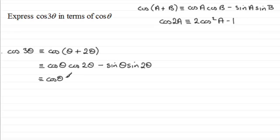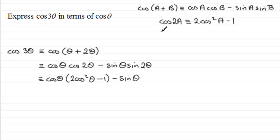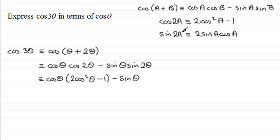So we can write cos(θ) multiplied by (2cos²θ − 1). For the next term, we have sin(θ) multiplied by sin(2θ). Using the double angle identity sin(2A) = 2sinA·cosA, if A represents θ then sin(2θ) = 2sinθ·cosθ, which we substitute in place of sin(2θ).